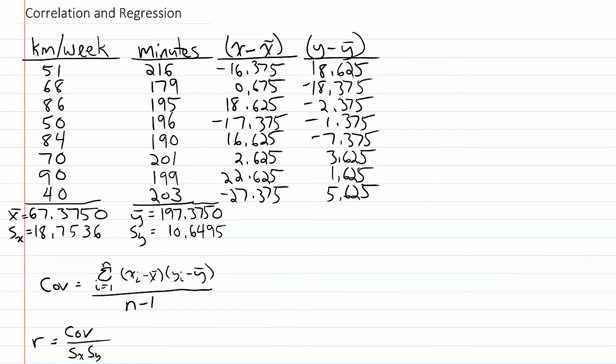Now I have the deviation scores for both variables, and what I need to do now is multiply them. I need to take deviation scores for x and multiply them by the deviation scores for y. In this first observation, it's going to be negative 16.375 times 18.625, which is negative 304.9844.